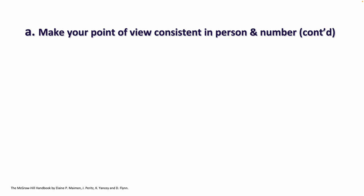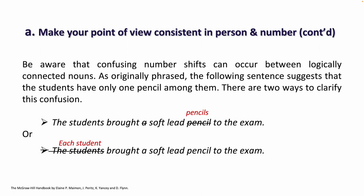Be aware that confusing number shifts can occur between logically connected nouns. As originally phrased, the following sentence suggests that the students have only one pencil among them. There are only two ways to clarify this confusion. 'The students brought soft lead pencils to the exam' — you put 'pencil' in the plural. Or you can say 'Each student brought a soft lead pencil to the exam.' So either write everything in plural, or write everything in singular.